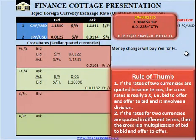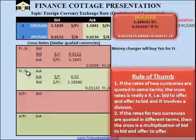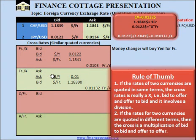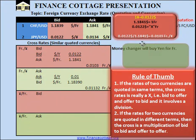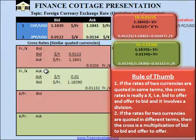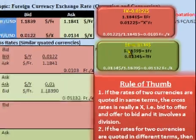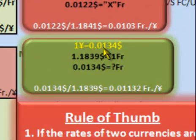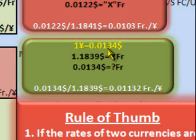Now let's build a story to understand the intuition behind calculating the ask price of francs per Yen, and why we are dividing the ask price of $1 per Yen by the bid price of $1 per franc. Let's take a look at this diagram. To calculate the ask price, we want to calculate at what price the foreign currency seller will sell Yen. The foreign currency seller will sell 1 Yen for $0.0134.